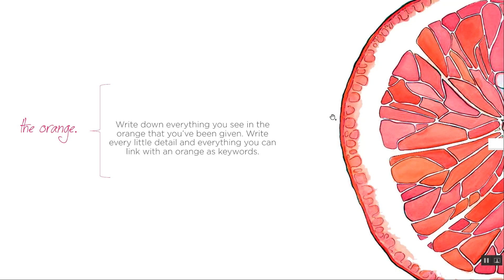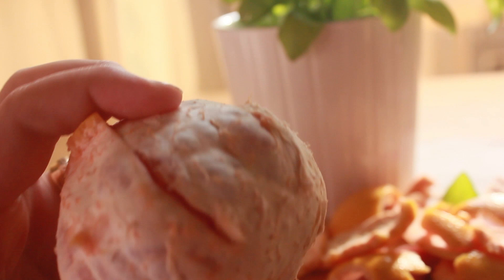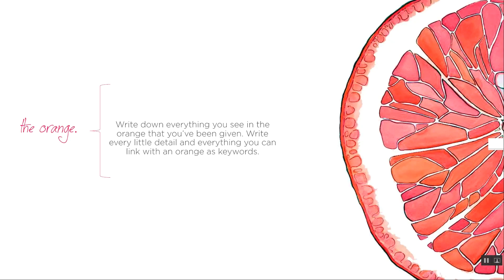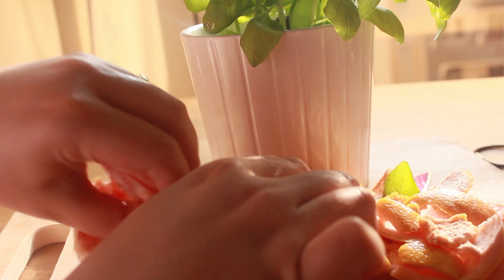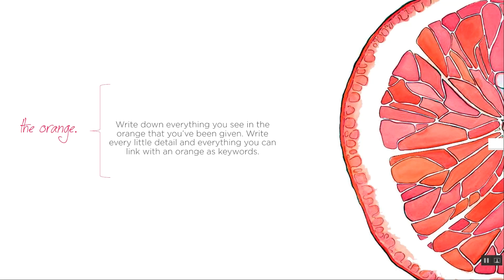What I requested from the students was to write down everything that they see within the orange — any representation, the color — basically an analysis of that orange in keywords. So it could be that the orange is layered, it could have veins, it could have pores on the skin, and then you can peel the skin and there are connections inside. It's all about making them analyze objects around them, whether in an aesthetic way or in a functional way.